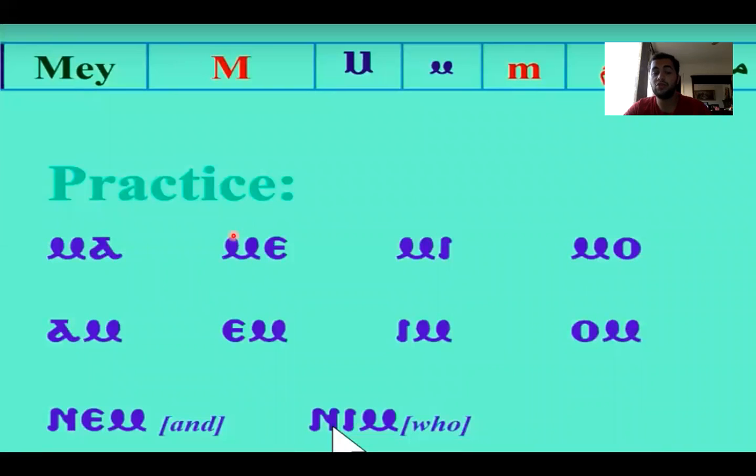So we can say the first two rows together. MA, ME, MI, MO, AM, EM, IM, OM.